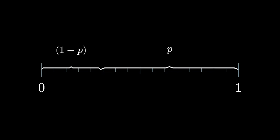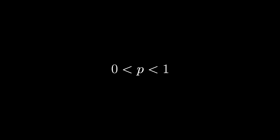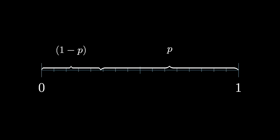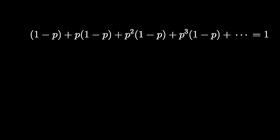To be general about it, let's say that you cut your interval into pieces of size p and one minus p, where p represents any number between zero and one. Cutting the piece of size p in similar proportions, we now get pieces of size p times one minus p and p squared. Continuing in this fashion, always cutting up the rightmost piece into those same proportions, you'll find that one minus p plus p times one minus p plus p squared times one minus p, on and on always adding p to the next power times one minus p equals one. Dividing both sides by one minus p, we get this nice formula.